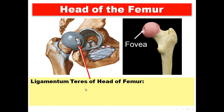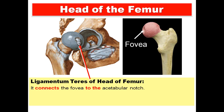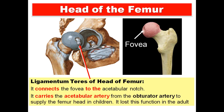Regarding the special features, start by the head. The head has a depression called the fovea, which gives attachment to the ligamentum teres of the femur. This ligament connects the fovea to the acetabular notch. It carries the acetabular artery from the obturator artery to supply the femoral head in children. It is very important in children but loses this function in the adult.